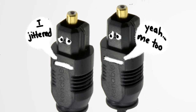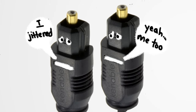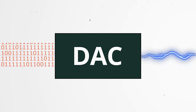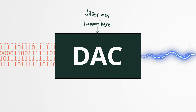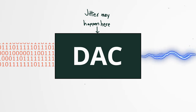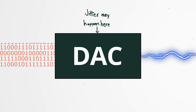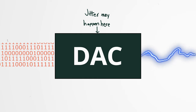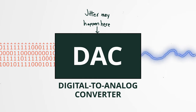The problem is an optical signal is prone to more jitter. Jitter can be its own video unto itself, so we'll just say that jitter can cause problems during the point at which a digital signal is converted into electrical impulses by the DAC, or digital to analog converter.